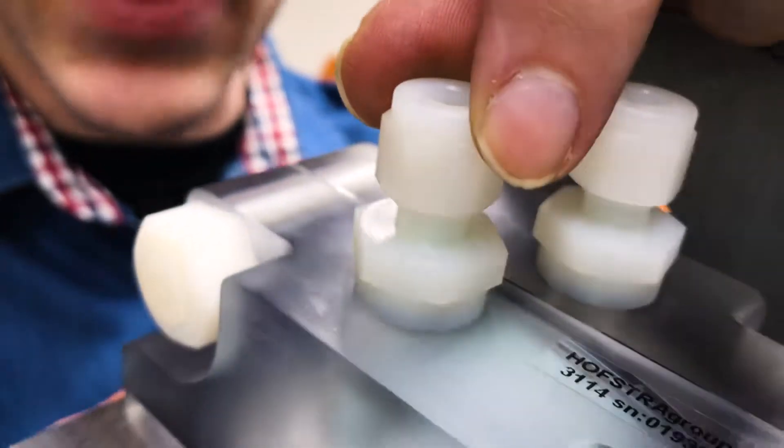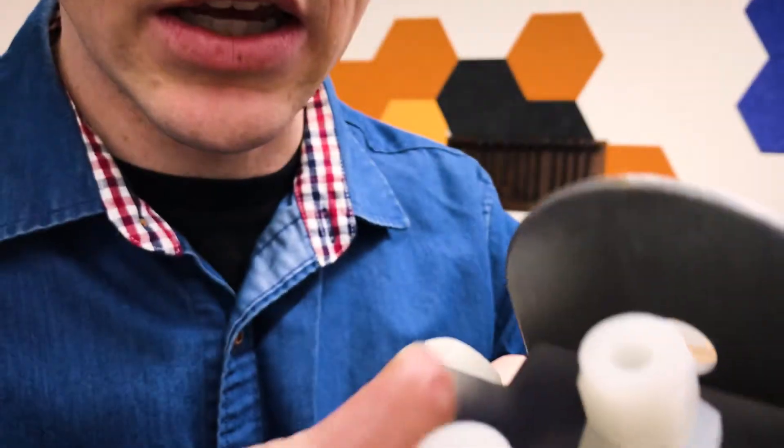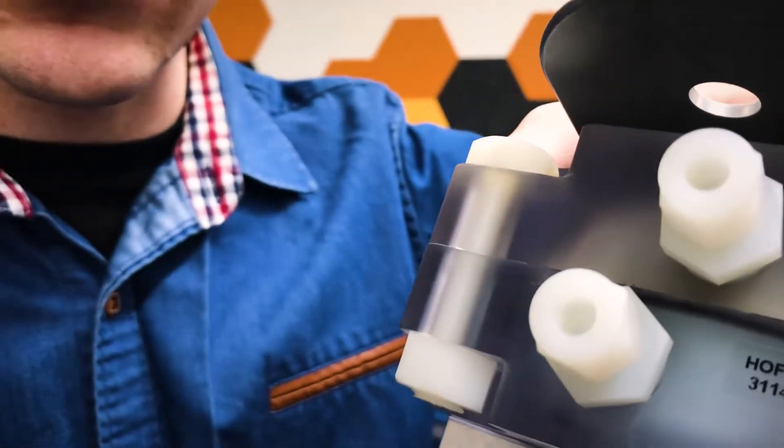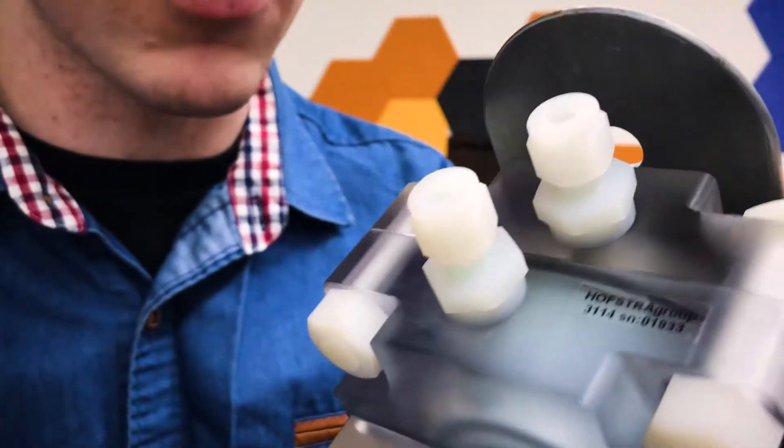I make sure that the nut on the Swagelok fitting is loose. Don't undo this completely. If you unscrew these, the ferrules will fall on the floor and you'll have to pick them up out of the dust, and it's just not worth it.